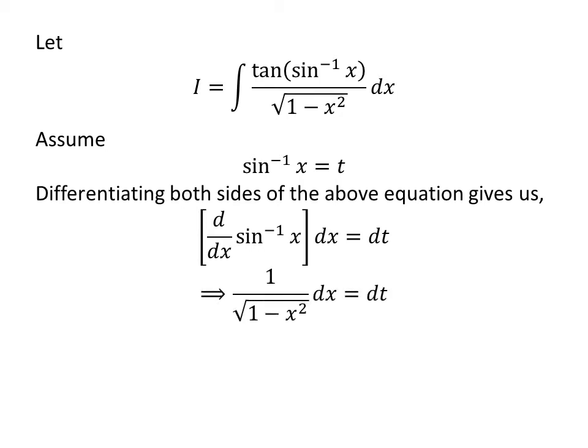As we know, derivative of arc sine of x with respect to x is equal to 1 upon square root of 1 minus square of x. So, 1 upon square root of 1 minus square of x times differential of x is equal to differential of t.